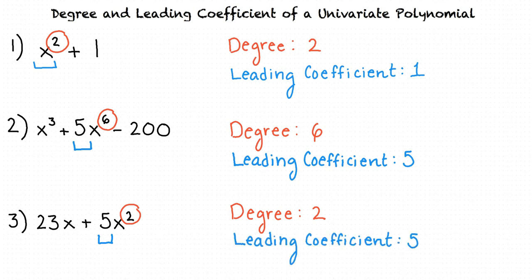So to summarize, the degree of a univariate polynomial is the highest power that the variable is raised to, and the leading coefficient of a univariate polynomial is the constant attached to the variable with the highest power. Great job, you definitely understand this topic.